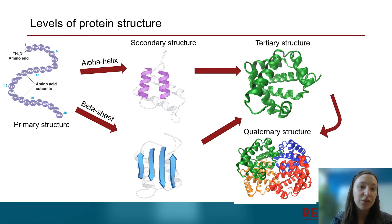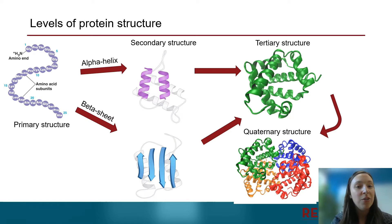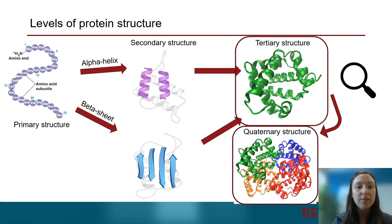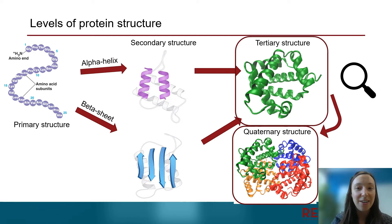Quaternary structure is formed when multiple polypeptide chains come together to form the fully functional protein. Not every protein will have multiple polypeptide chains, so some proteins will be fully functional with just tertiary structure. X-ray crystallography will characterize tertiary and quaternary structure, which is what we'll be looking at today.